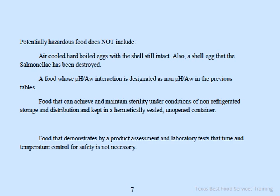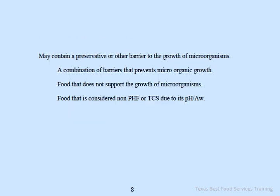Potentially hazardous food does not include air-cooled hard-boiled eggs with the shell still intact, or a shell egg from which salmonella has been destroyed. Also excluded is food whose PH-AW interaction is designated as non-PHF-AW, food that can achieve and maintain sterility in hermetically sealed containers, food that demonstrates by laboratory testing that TCS is not necessary, food containing preservatives or barriers to microorganism growth, and food that does not support microbial growth.